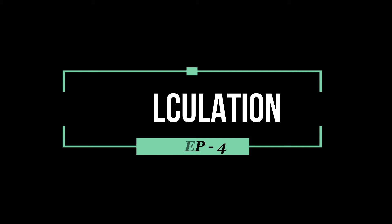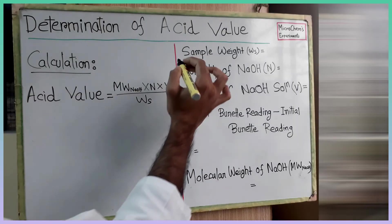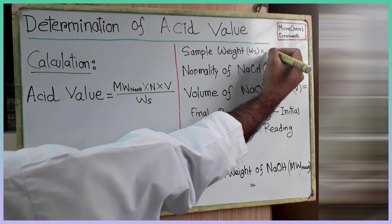Now we will calculate the acid value of our sample. At first, we will put the values in the right side of the board.